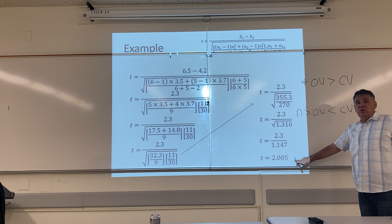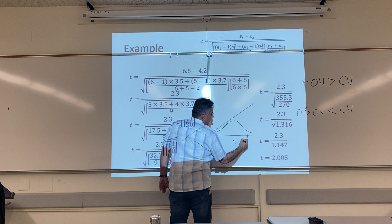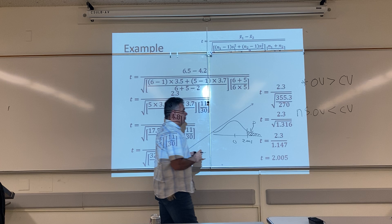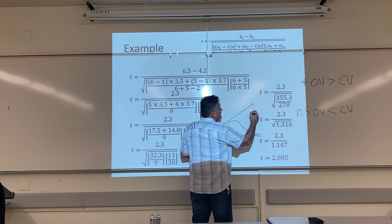Our answer, 2.005, is actually making an area on a normal curve. Here is zero, and here is our answer, 2.005. Our answer is making an area, and the size of this area is what we call P. What we're really doing is comparing the size of the area that our answer makes against an area that we consider decisive. We call that area alpha.